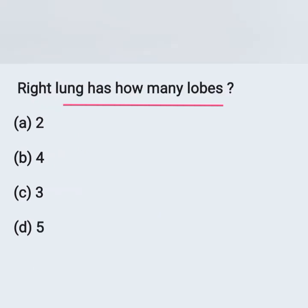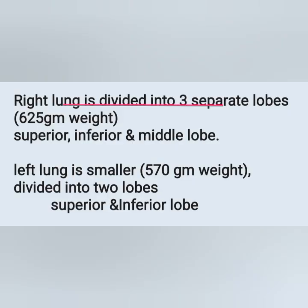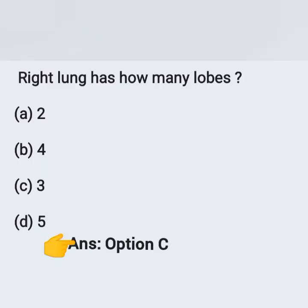Next question: the right lung has how many lobes? Options: A) 2, B) 4, C) 3, D) 5. The right lung is divided into 3 lobes: superior, middle, and inferior, and weighs 625 grams. The left lung is smaller, weighing 570 grams, and is divided into 2 lobes: superior and inferior. The correct answer is option C, 3 lobes.